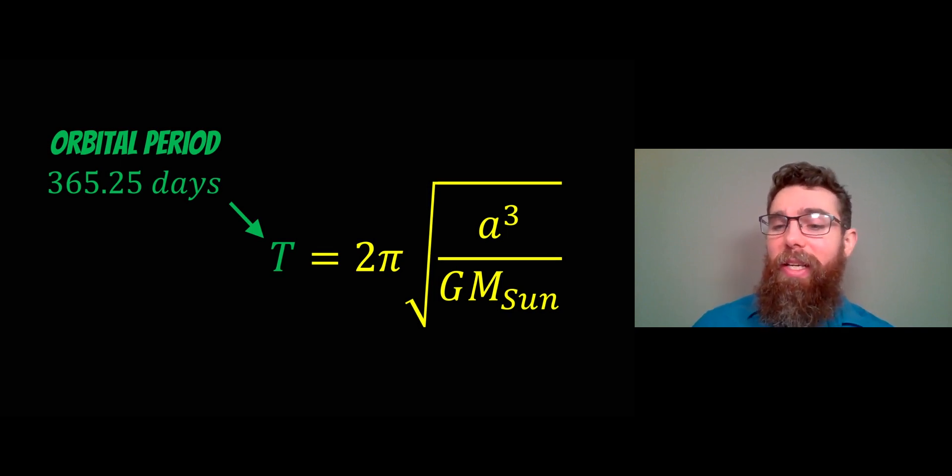The orbital period equation is given here, and it has a, which is your semi-major axis, and the mass of the Sun. That's all we really need—we've got the orbital period now.